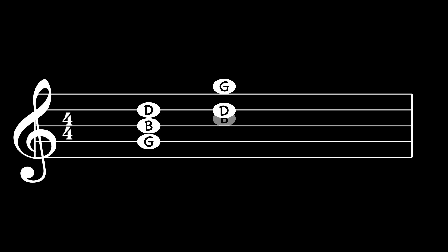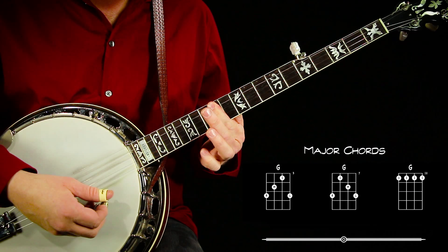If we were to invert the chord by moving the G up one octave to the top of the stack, leaving the B in the bass, this is known as the first inversion of a G chord. Repeat the process and you get the second inversion. These are all still G chords, regardless of how the notes are stacked. And if we add the first string to fill out the chords, there you have it — the three fundamental major chord shapes on the banjo.